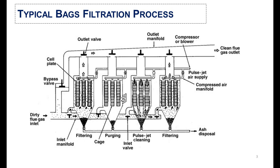In the first step, the dirty flue gas is introduced into the bag assembly, where the dust particles are detained inside the bags while the clean air moves forward. In the second step, air is used to purge out the dust from the bag filters.